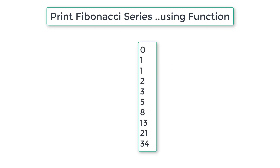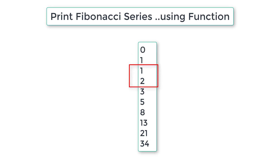The first two numbers are 0 and 1. Add 0 and 1, you will get 1 — that is the next number. Now add the previous two numbers, that is 1 and 1, so 1 plus 1, you will get the next number which is 2. Similarly, add the previous two numbers, that is 1 and 2 — 2 plus 1 is 3. Then 3 plus 2, you will get 5, and so on.